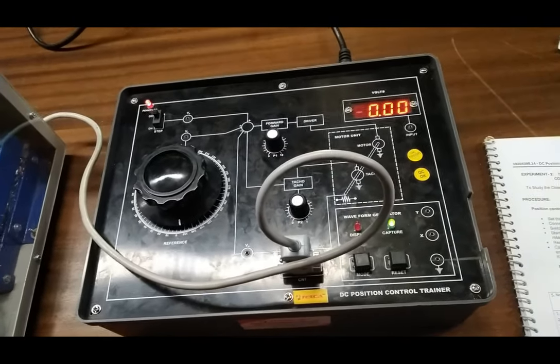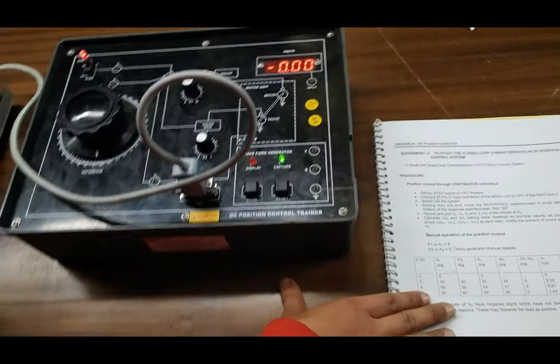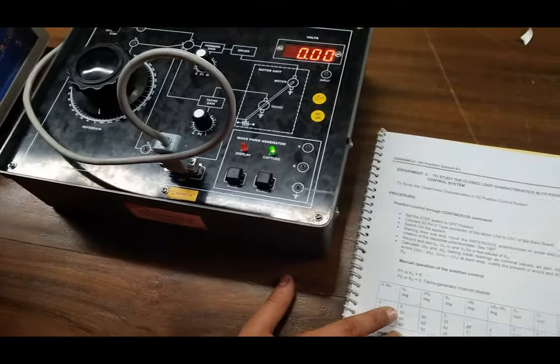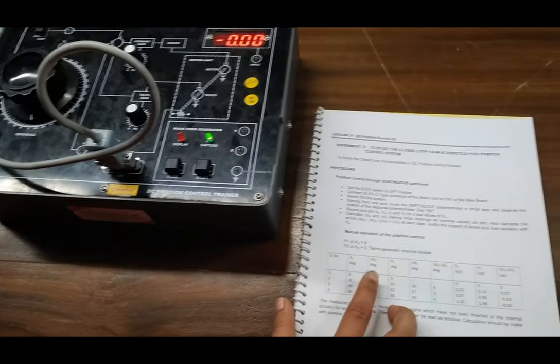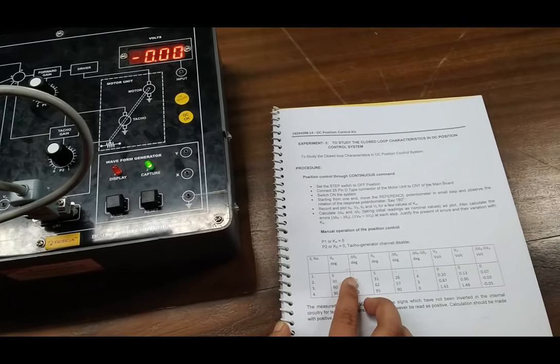For theta r, we take the reading as shown in the table for 0 degrees. Delta theta r is calculated as final minus initial. We see that 0 is our initial and 0 is the final.